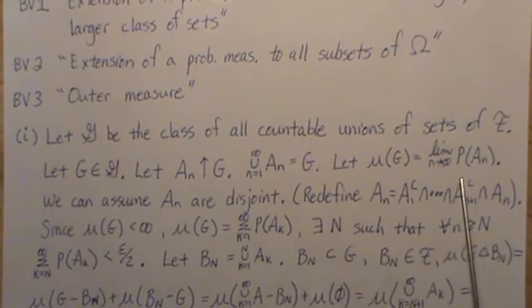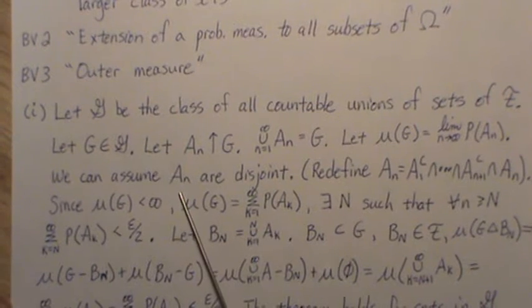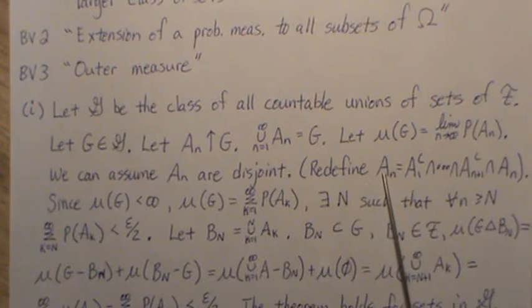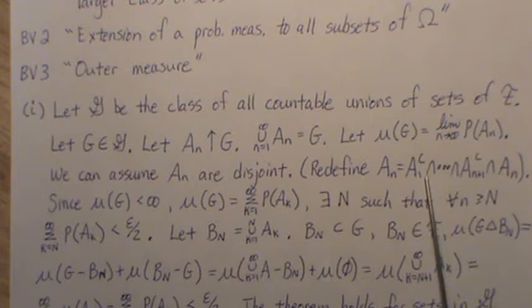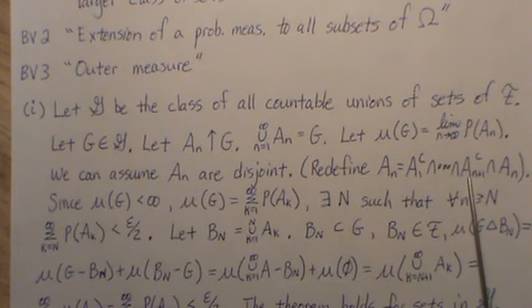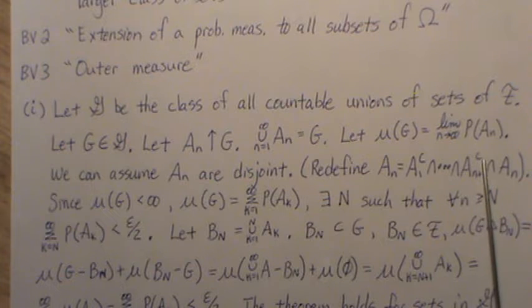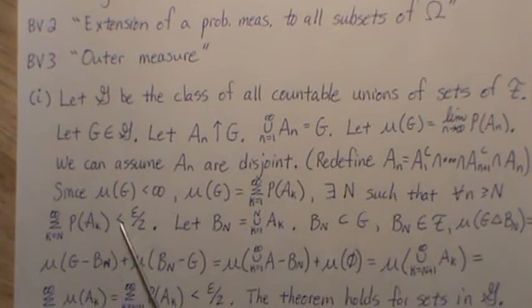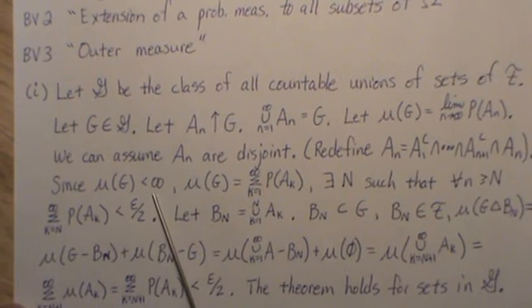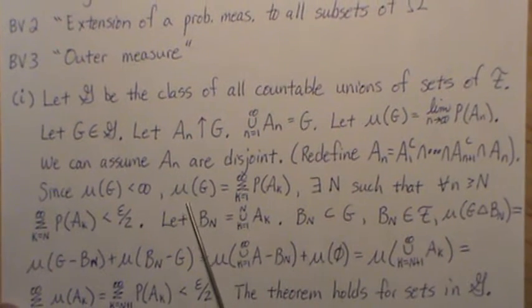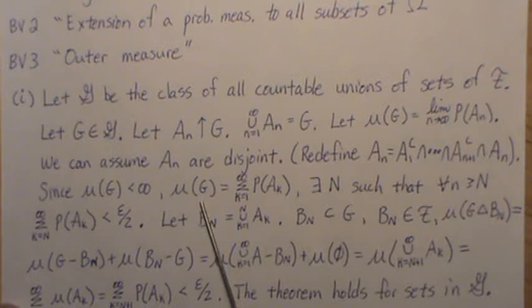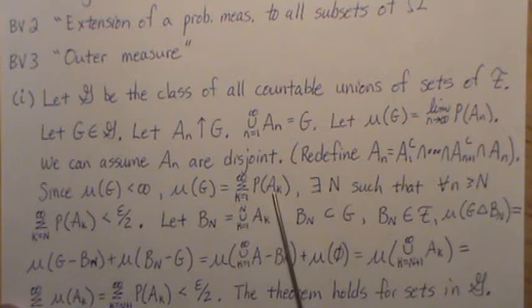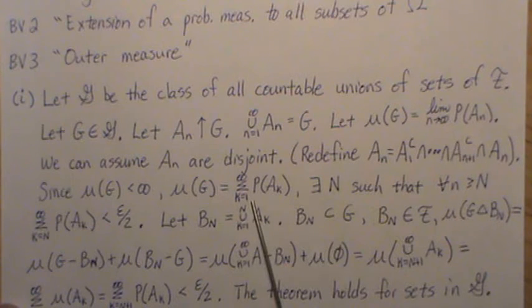We can assume that the A_n are disjoint because we can always redefine them. A_n is equal to A_1 complement intersect A_2 complement intersect... intersect A_{n-1} complement intersect A_n. Now, since the measure of G is finite, then the measure of G is equal to the infinite sum of these measures of A_k. They're all disjoint, so it's the sum.